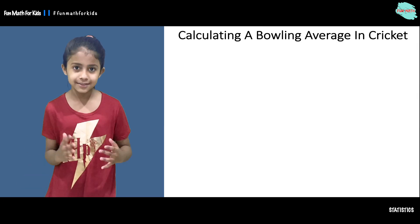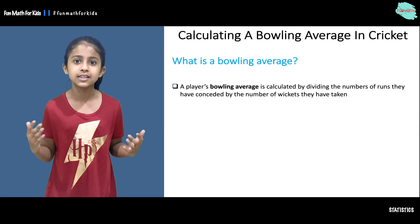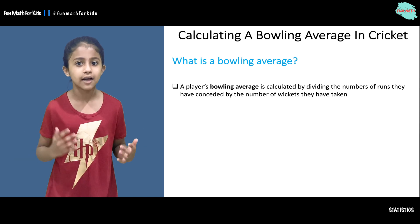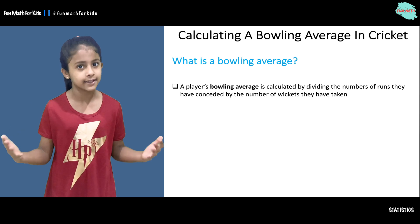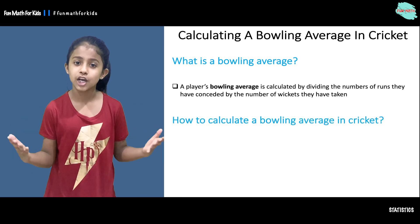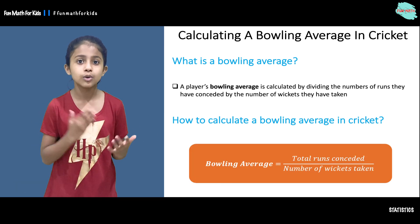Welcome to Fun Math. In the previous video we talked about how to calculate a batting average in cricket. In this video we will be talking about how to calculate a bowling average in cricket. A bowling average is calculated by dividing the number of runs they have conceded by the number of wickets they have taken.